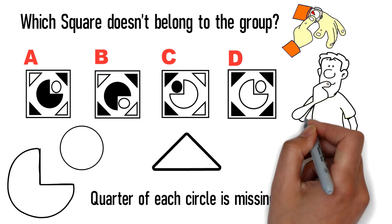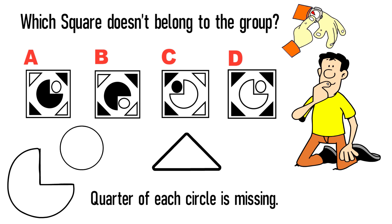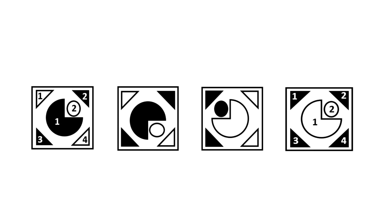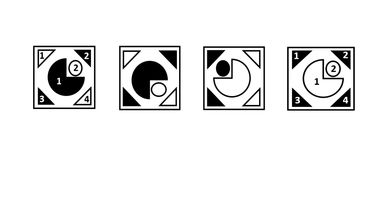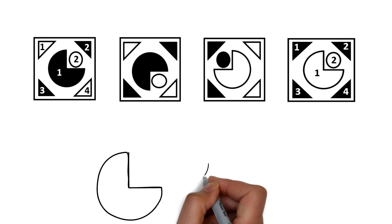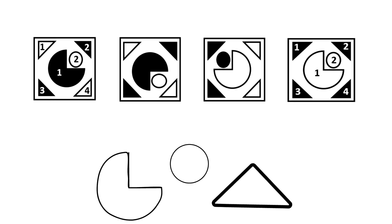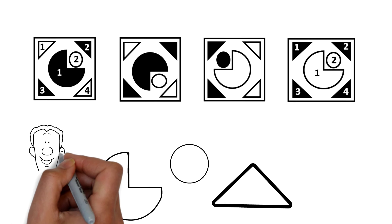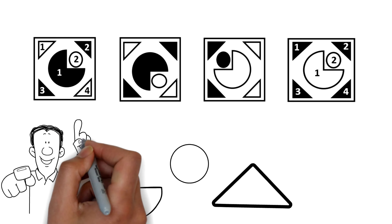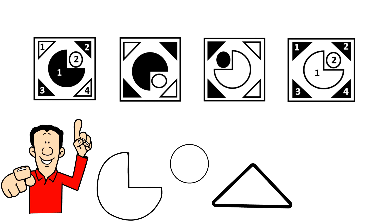The key to solving this challenge is to detect the pattern — a skill you need to develop to be successful on the test. Because there are two shapes present — triangles and circles — you should try to detect the pattern among triangles and then among circles. In this particular question there is only one pattern: the pattern of the triangles.